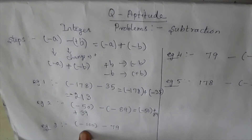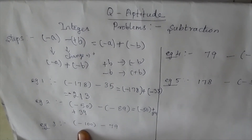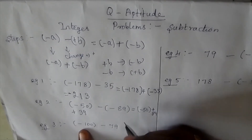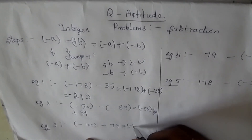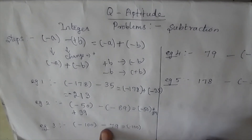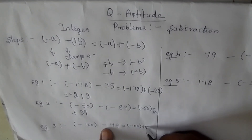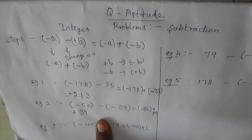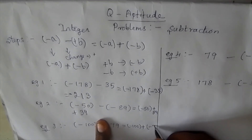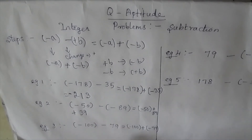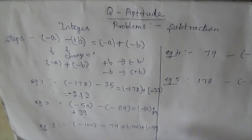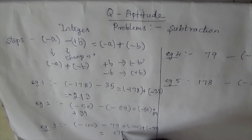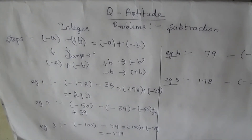Example 3: minus 100 minus 79. Write minus 100 as it is. Change the sign: plus 79 becomes minus 79. Both signs are the same, so you add. The answer is minus 179, keeping the same sign.